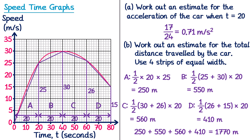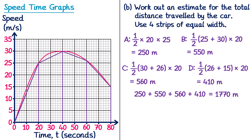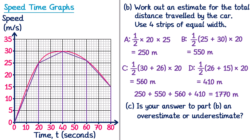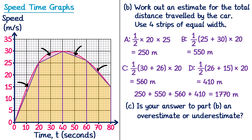A common follow-up exam question asks whether the answer is an overestimate or an underestimate. The real area under the curve includes small extra pieces between the straight-line strips and the actual curve that we didn't account for. So our answer is an underestimate — it's slightly lower than the actual answer. If asked to give a reason, explain that there are extra bits of area between the trapeziums and the actual curve.